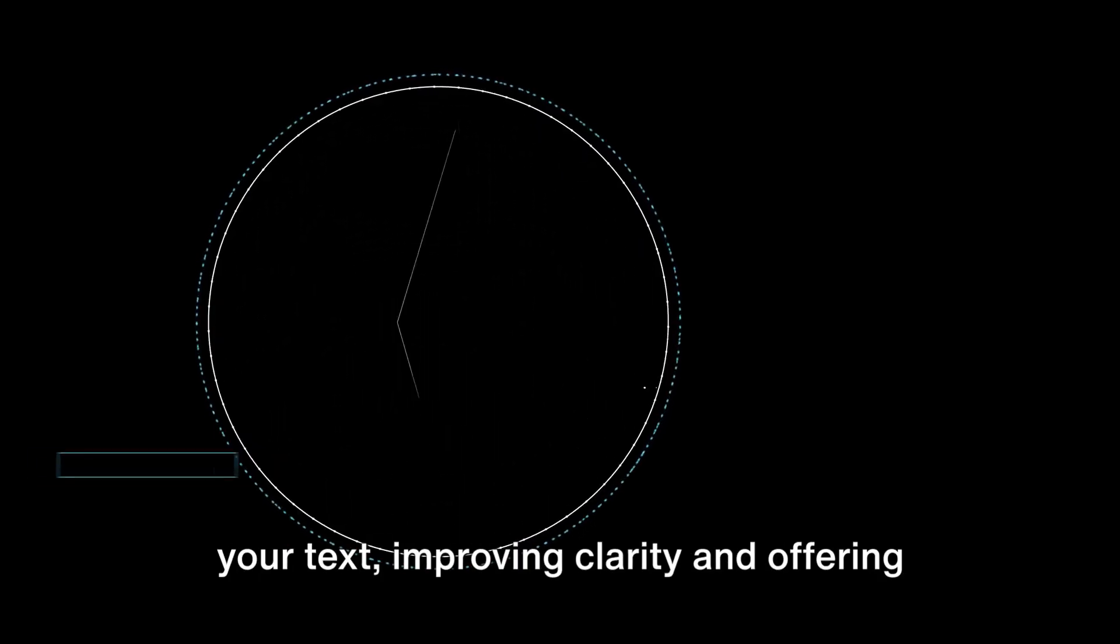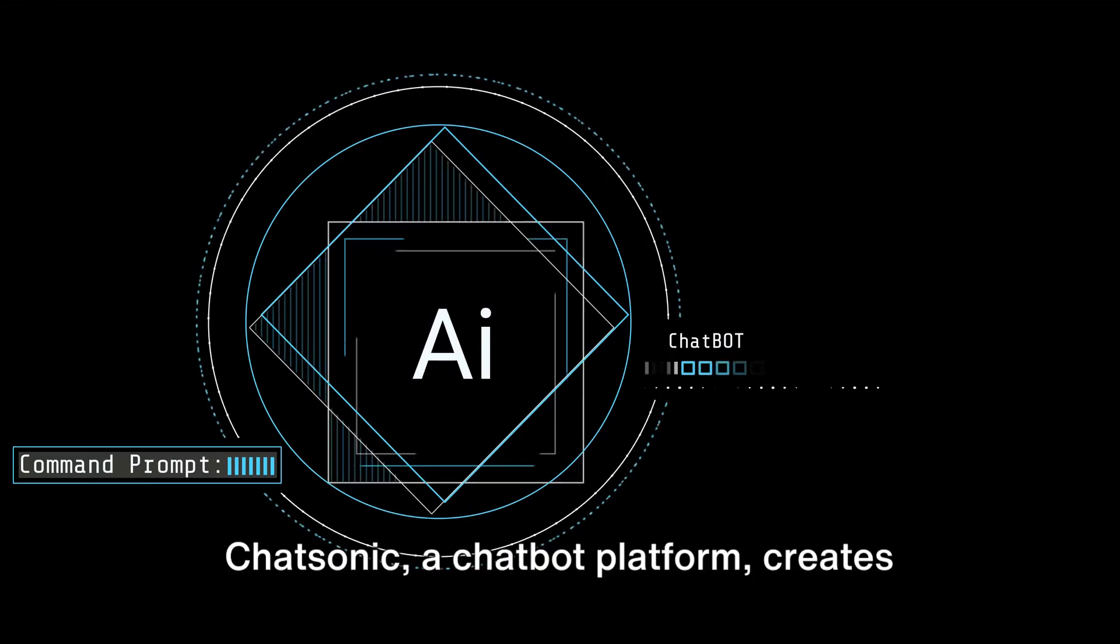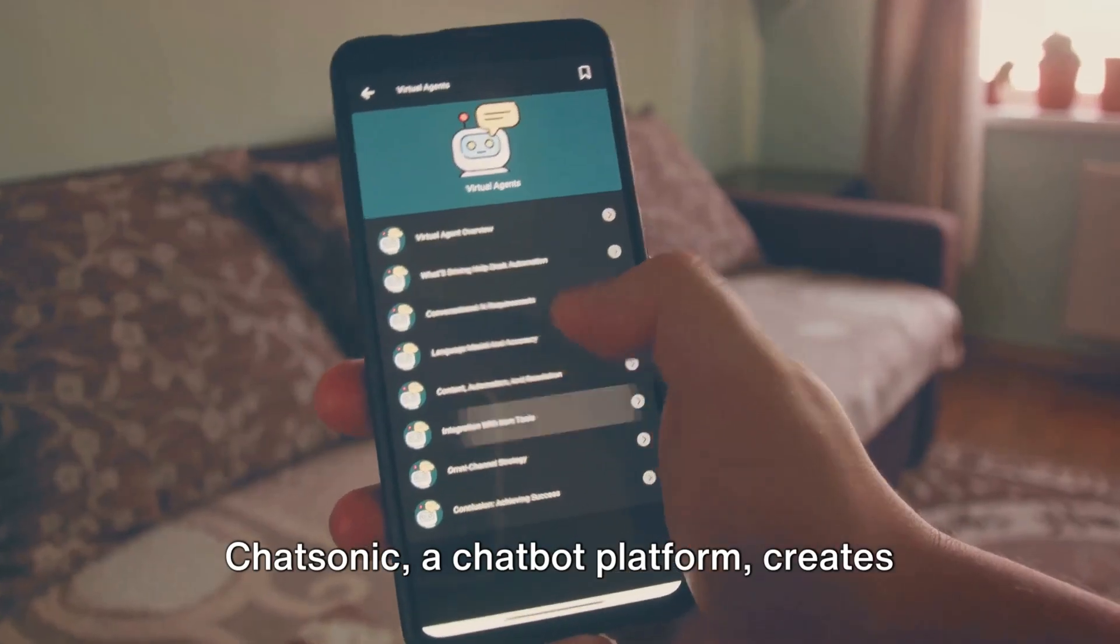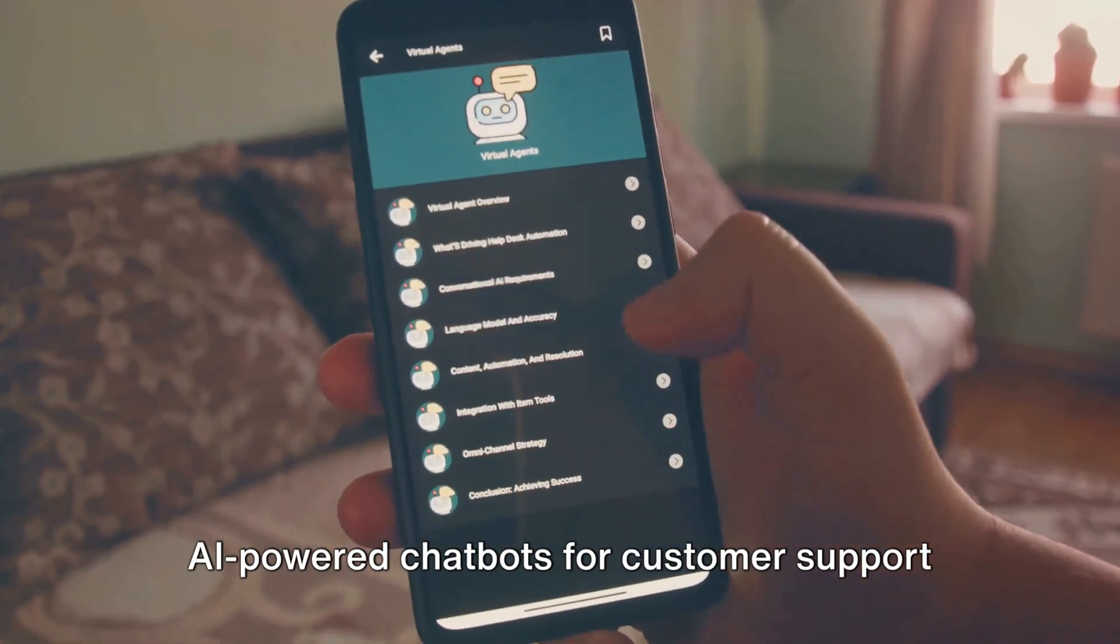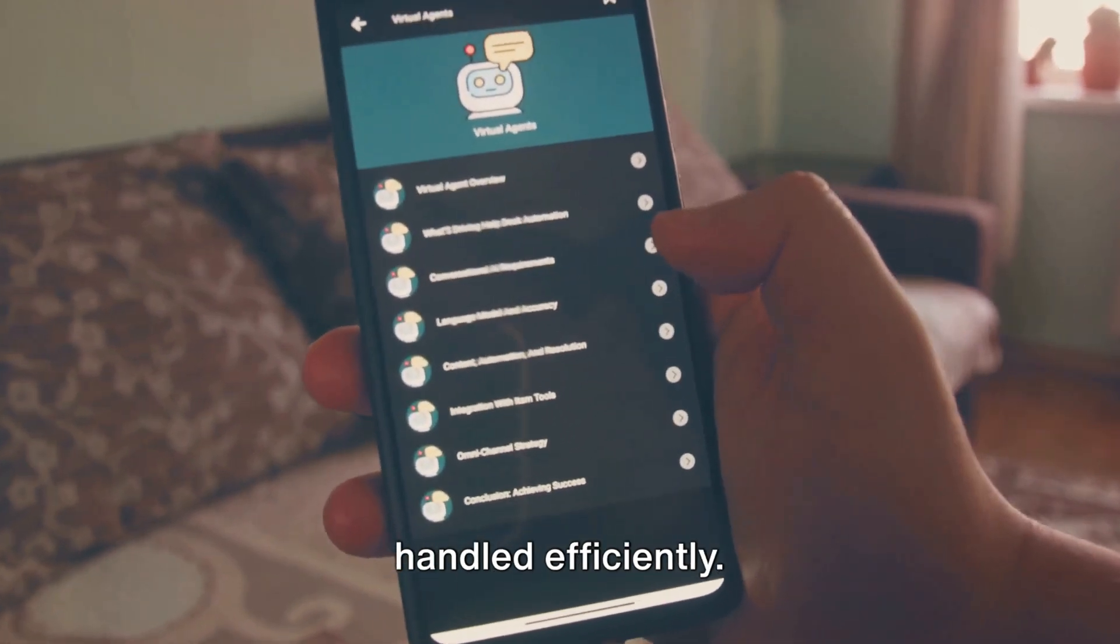Quillbot restructures and paraphrases your text, improving clarity and offering creative text formats. Chatsonic, a chatbot platform, creates AI-powered chatbots for customer support and sales, ensuring customer queries are handled efficiently.